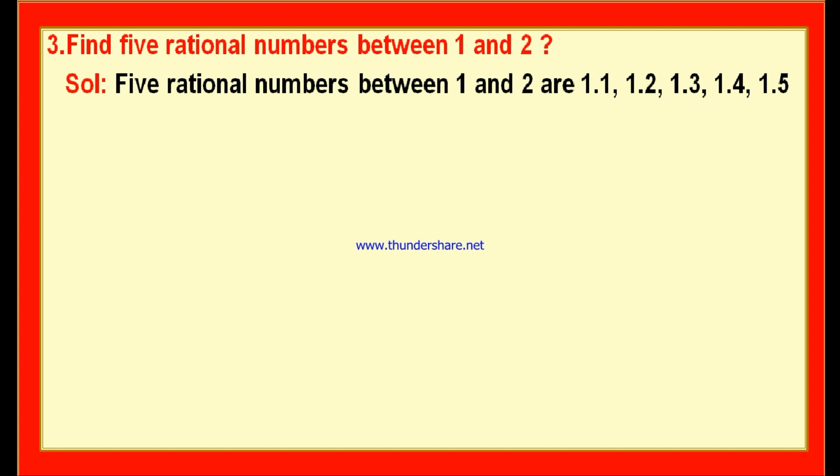The question didn't ask us to write in the form of p by q. But every terminating decimal is a rational number, and every non-terminating recurring decimal is also a rational number. So any 5 values between 1 and 2 work. If asked in p by q form, convert: 1.1 is 11 by 10, 1.2 is 12 by 10, 1.3 is 13 by 10, 1.4 is 14 by 10, 1.5 is 15 by 10. There is another formula: the rational number between a and b is (a + b) by 2, but that method is more time-consuming.